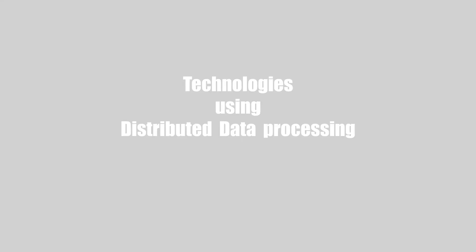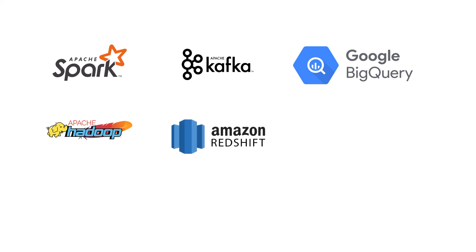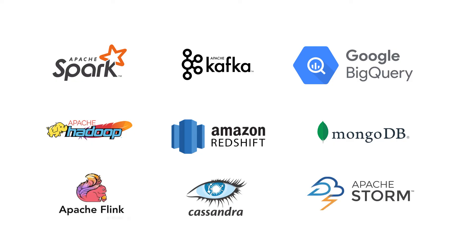Now let's look at the technologies that use distributed data processing. Apache Spark is the world's most popular big data processing system, offering benefits like in-memory processing. Other technologies include Apache Kafka — a real-time streaming system — Google BigQuery, Hadoop, Amazon Redshift (AWS's data warehousing solution), MongoDB, Apache Flink, Cassandra (a NoSQL solution), and Apache Storm. This is a small list — there are many more technologies that utilize distributed data processing.